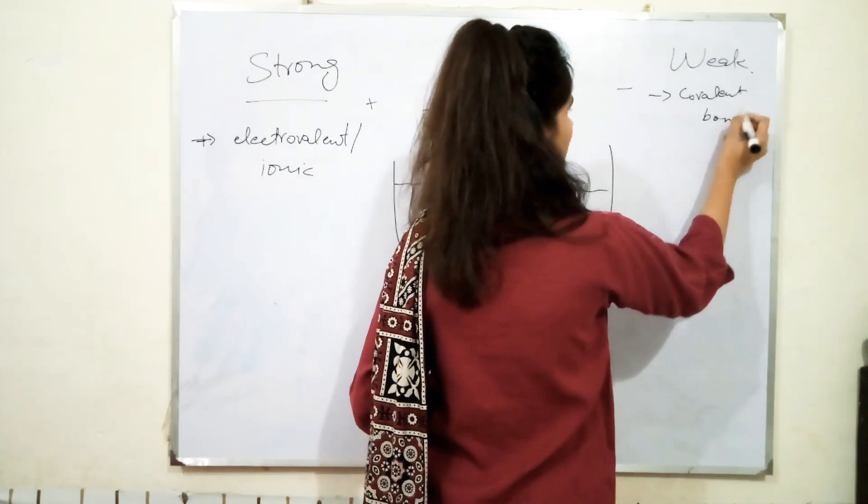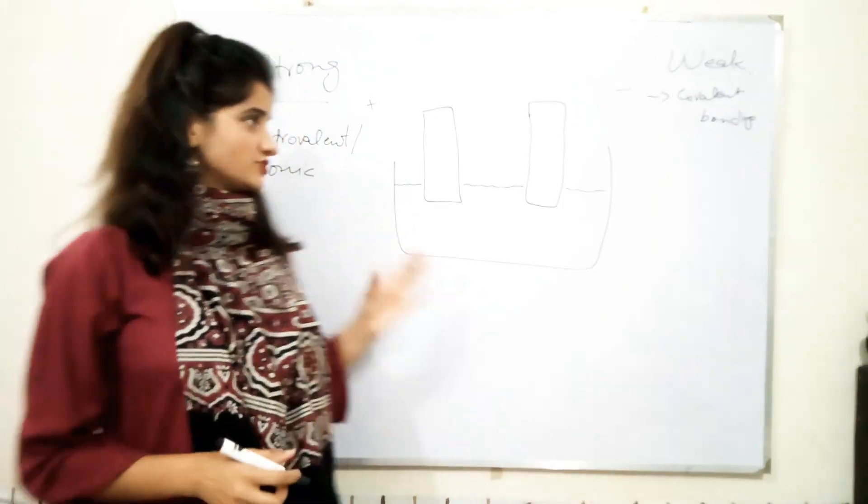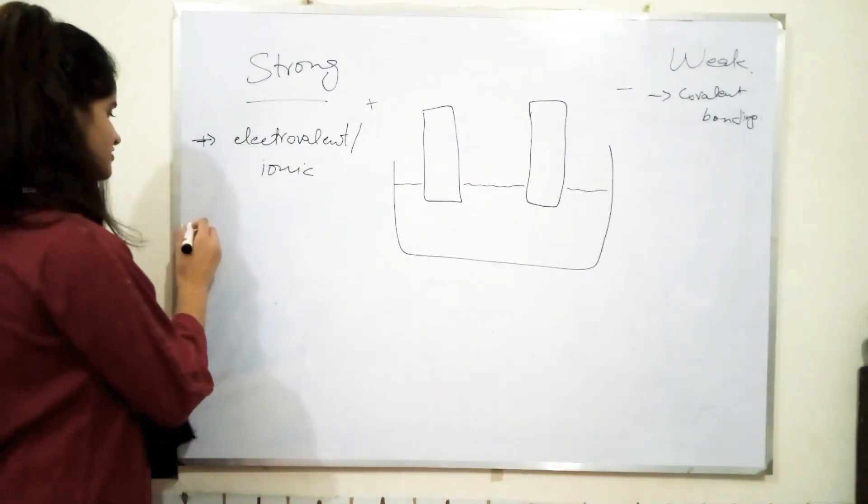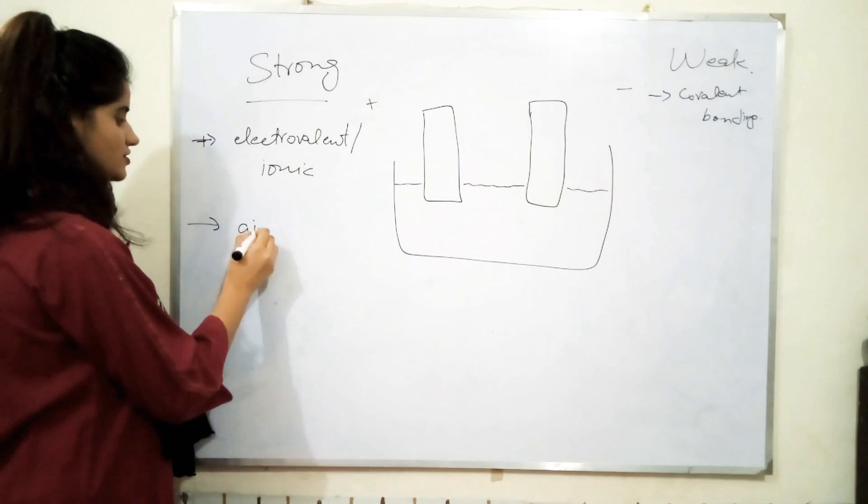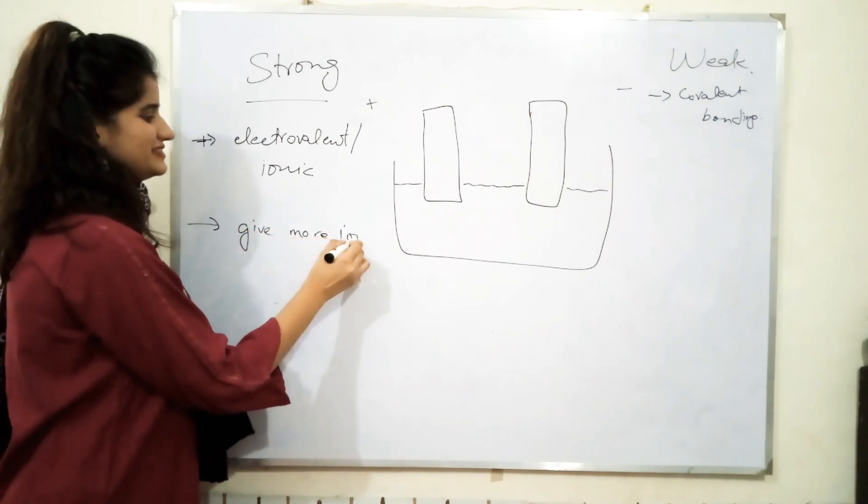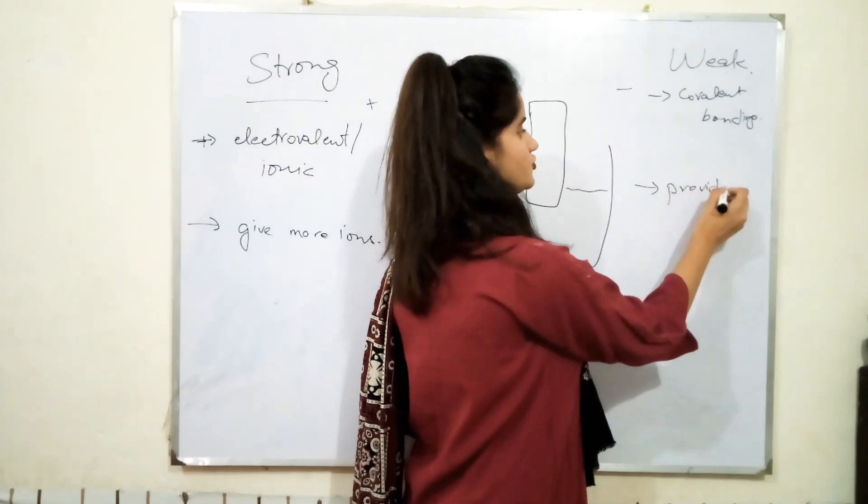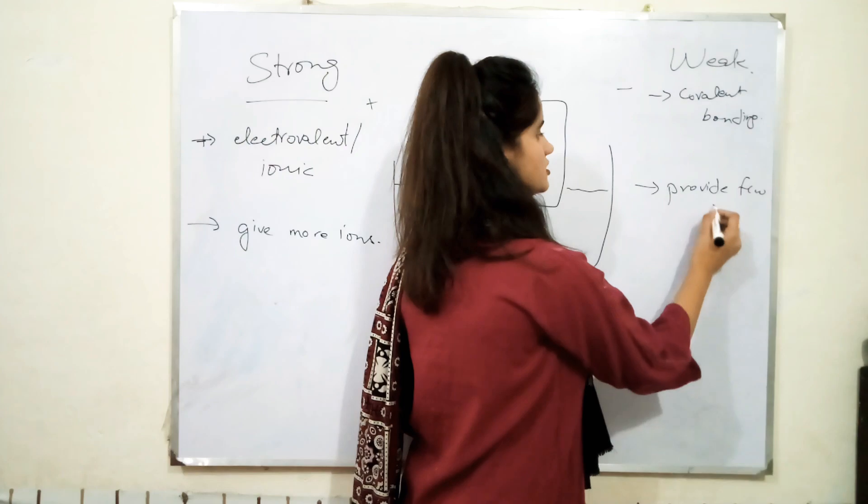What other property they both constitute? The other property is the strong electrolyte gives more ions, it provides more ions, while the weak electrolyte gives or provides few ions.